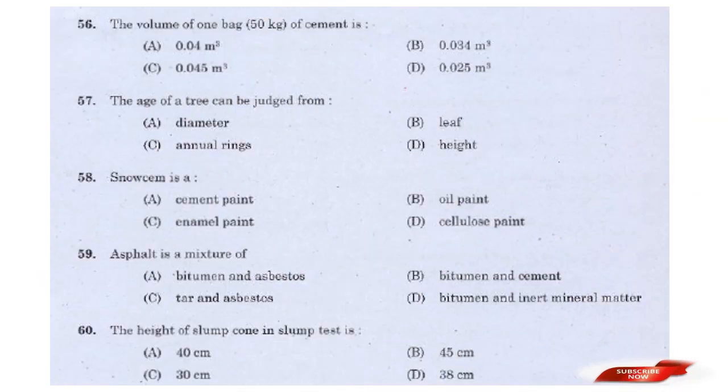Question: The volume of 1 bag (50 kg) of cement is — options: 0.04 m³, 0.034 m³, 0.045 m³, 0.025 m³. Answer: Option B — 0.034 m³.